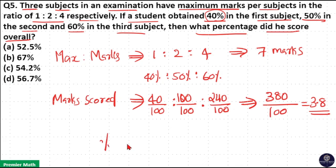The percentage of marks scored equals 3.8 by 7 times 100. He scored a total of 3.8 in these three subjects, and the total maximum marks is 7.